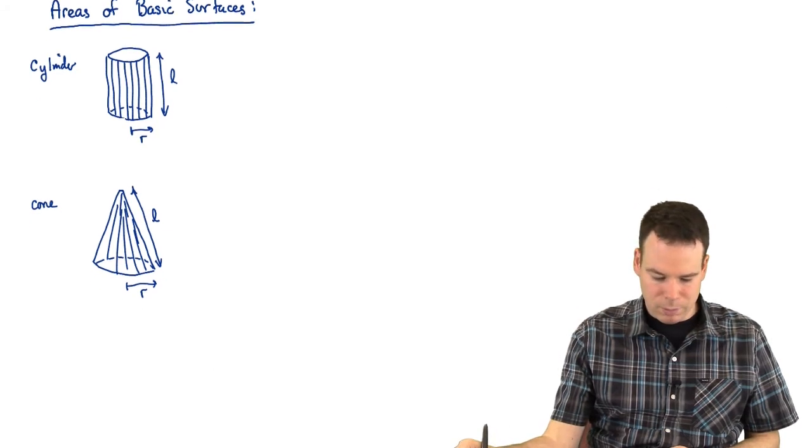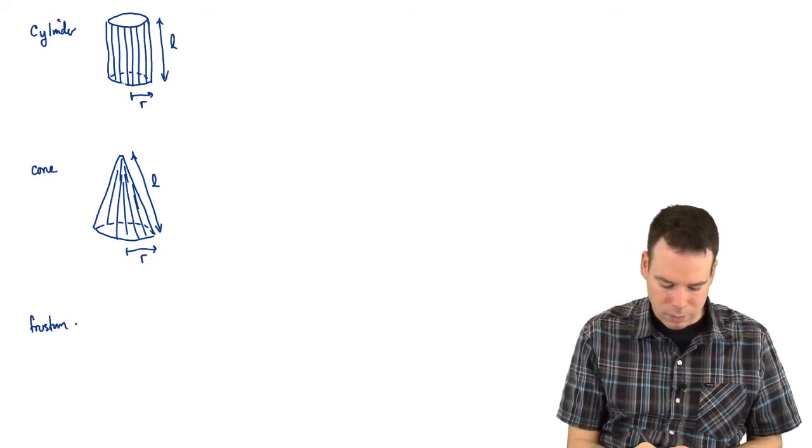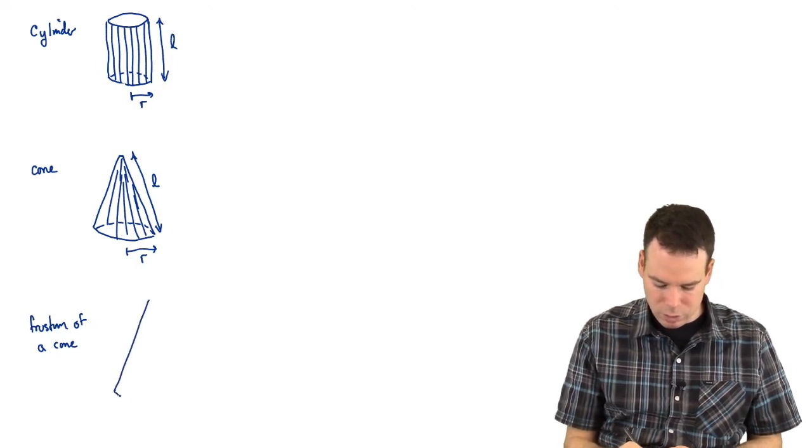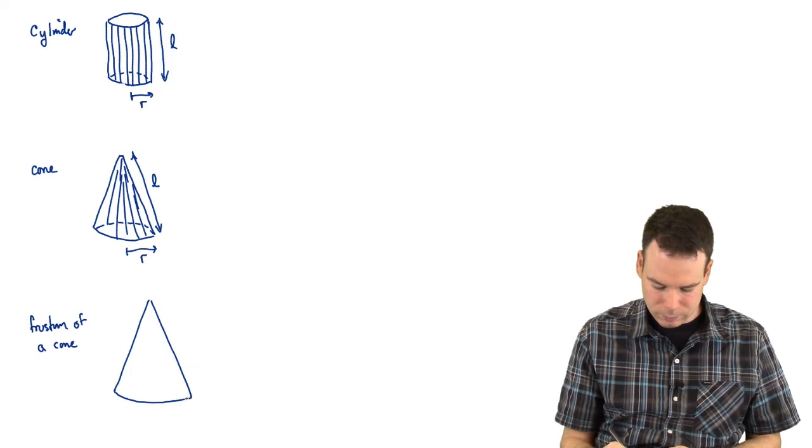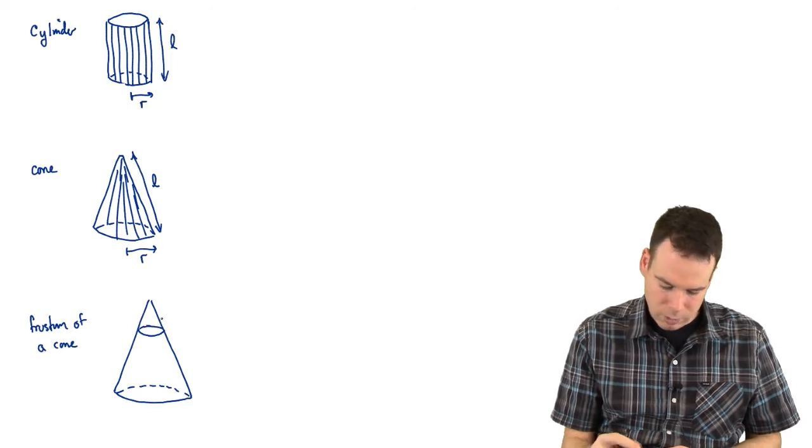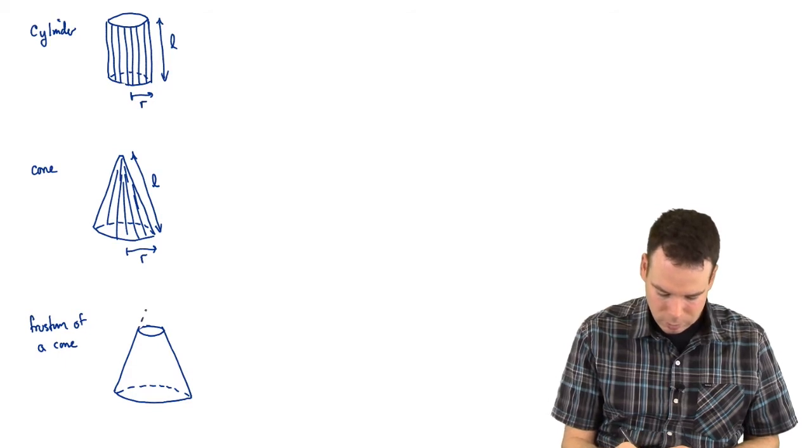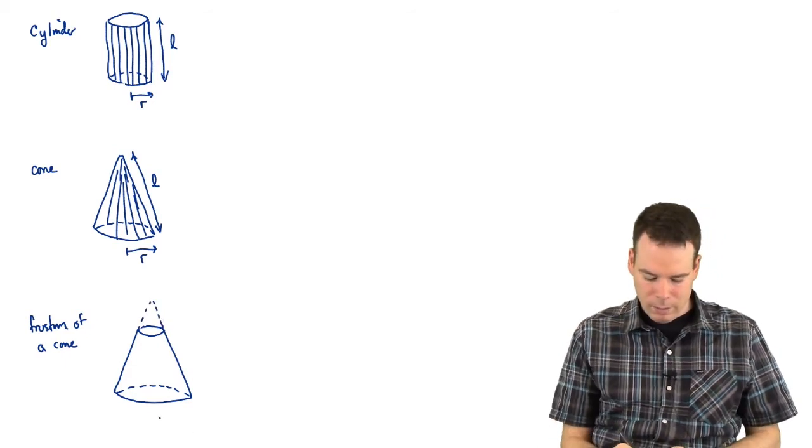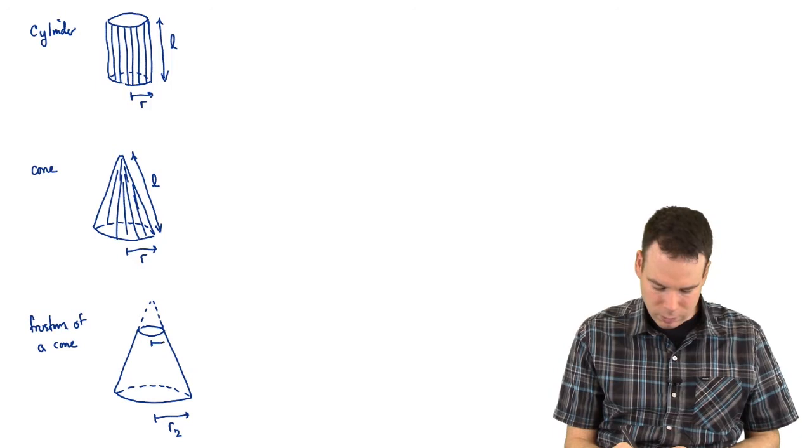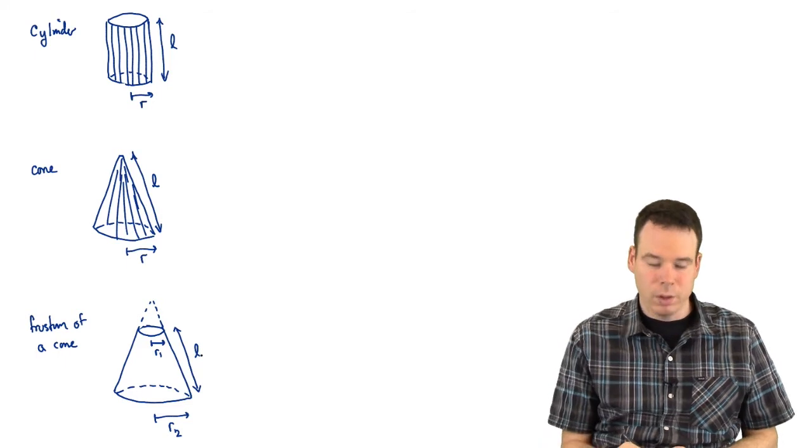And the last shape that I want to work out the surface area of is the frustum of a cone. You can think of this as taking a whole cone and just lopping off the top of it. So I'm going to cut off the top but I'll dot it in just so we can see this is really part of a bigger object. Here we've got base radius R2, top radius R1, and side length L.